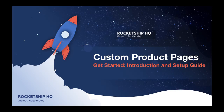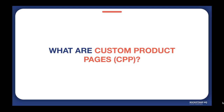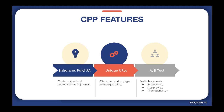Hi everyone! In this video, we will shed some light on how to effectively test custom product pages. So first, what are custom product pages, which are also commonly known as CPP? Custom product pages were a feature introduced in iOS 15 that have been a game changer for customizing user journeys. A custom product page is an App Store page that is customized to a specific audience or message.